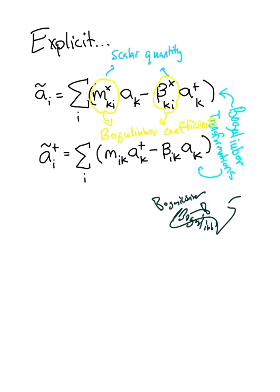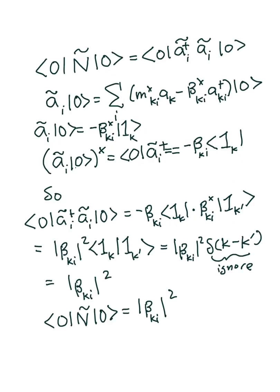We can take the expression value of the number operator in the vacuum state in curved space, which tells us how many particles an observer in curved space will see in what a flat space observer would call a vacuum.